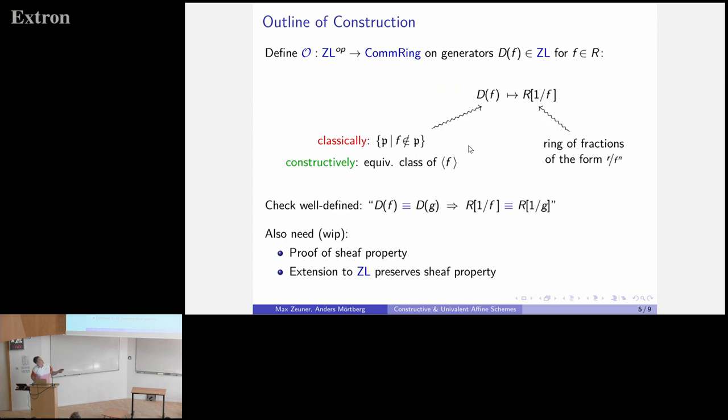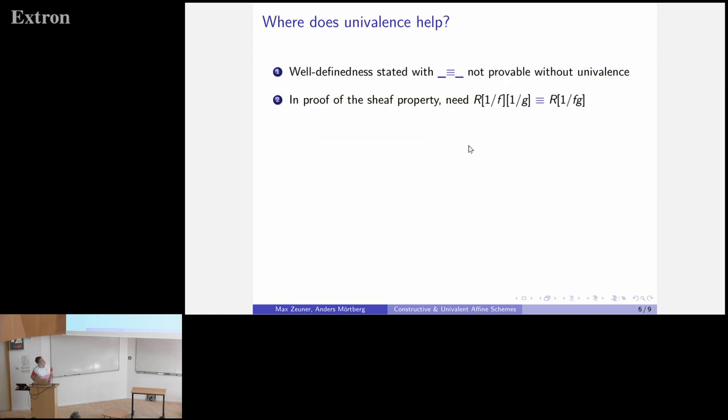Where does univalence come into play? This path we can't get without univalence. We can prove them isomorphic, we can prove there is a unique isomorphism by the universal property of localization, but we don't get a path. Also, when you prove the sheaf property, you stumble on this ring which is a ring of double fractions. We first invert f and then g, and we need the fact that this is the same as inverting f times g. This we can also get with univalence by applying our function SIP.